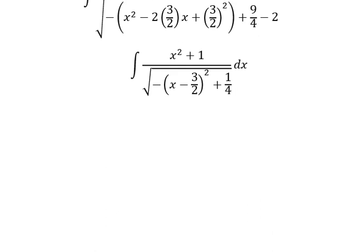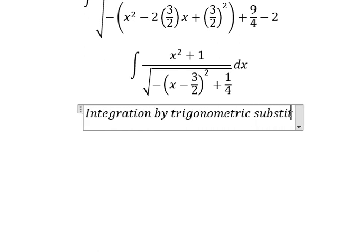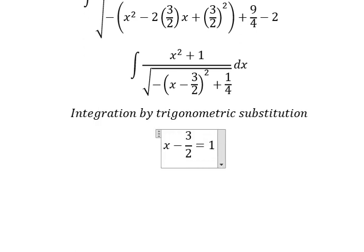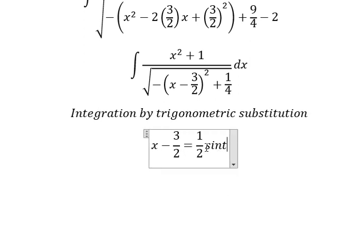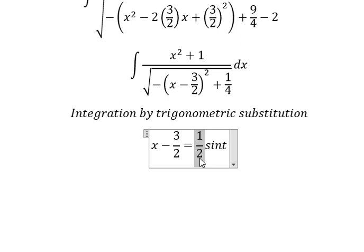So we can use integration by trigonometric substitution. I will put s minus three over two equals to one over two sin T. Because if I put this in here, we have one over four sin T squared. Then one over four factored out gives one minus sin T squared, which we change to cosine T squared.